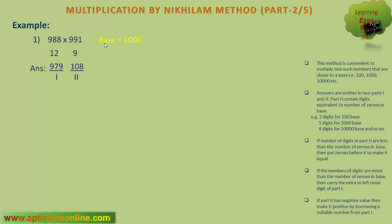Before finalizing the answer, we have to check whether the part 2 contains as many digits as the number of zeros in base. So for base 1000, the second part must contain 3 digits. Here the second part already contains 3 digits. Thus the final answer is 979108.